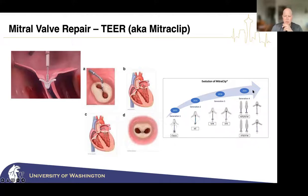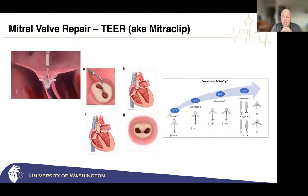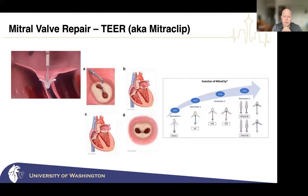The first generation of these clips came around in 2003, and we're now about 20 years into it. There are multiple shapes, sizes, and widths with a large decision framework for how to use them best. We've also started applying this technology to the tricuspid valve, and there's now a TAVR-like valve that can go in the tricuspid valve as well — lessons learned on the aortic and mitral valves are being applied nicely to the tricuspid.